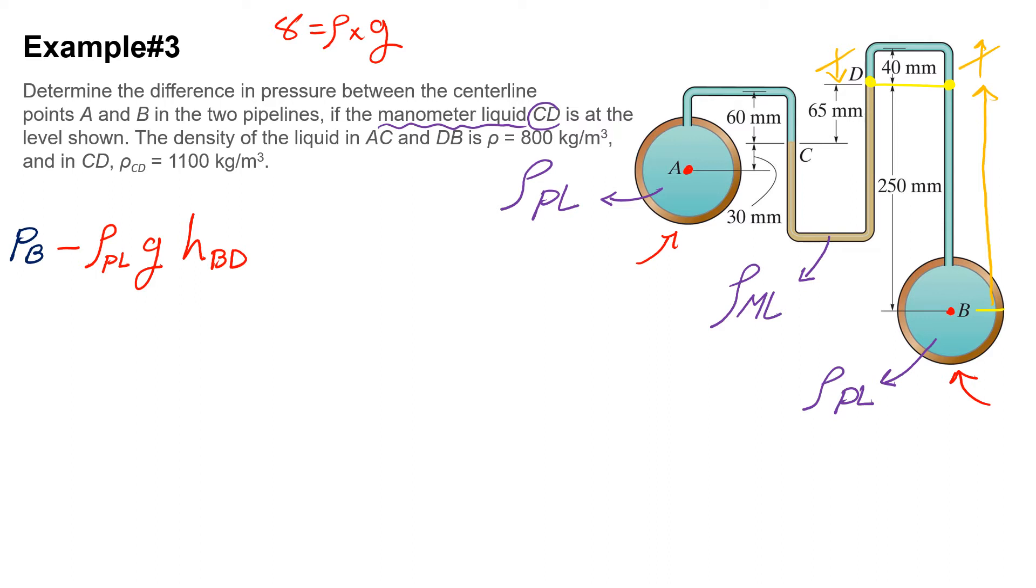Now from point D I need to move all the way to point C, the interface between my manometer liquid and pipeline liquid. I do not need to move all the way - I just need to move from here to this point, because that point has the exact pressure at point C. They're both on the same horizontal plane. Because I'm going down it will be positive, then I am moving in the manometer liquid: plus ρML g hDC.